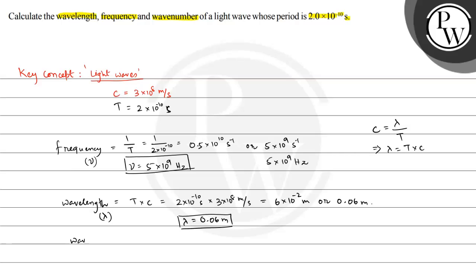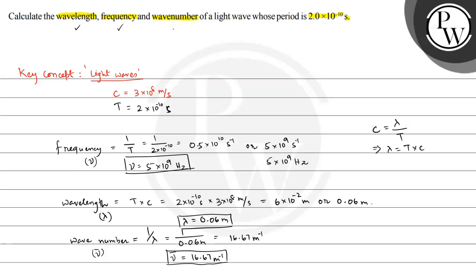Now, what is the wave number? Wave number is equal to 1 by wavelength, so 1 by 0.06 meters, that is 16.67 meter inverse. So nu bar is 16.67 meter inverse. These are our calculations — we determined the wavelength, frequency, and wave number for this light wave whose period is 2.0 into 10 raised to the power minus 10 seconds. I hope you understood the concept well. Best of luck!